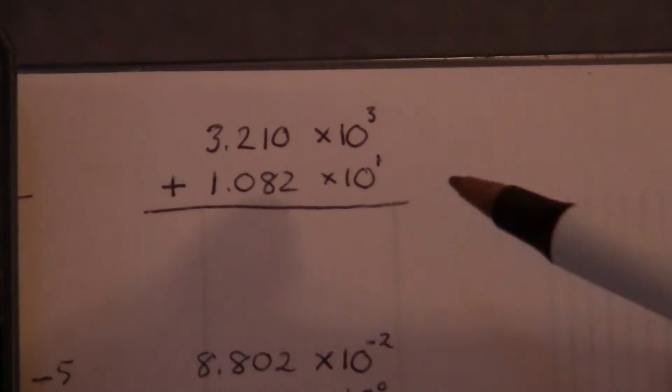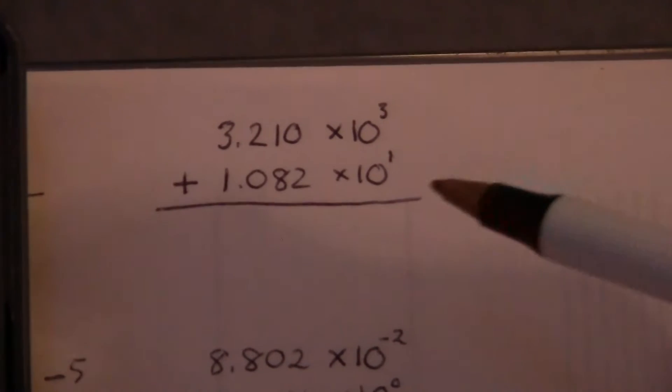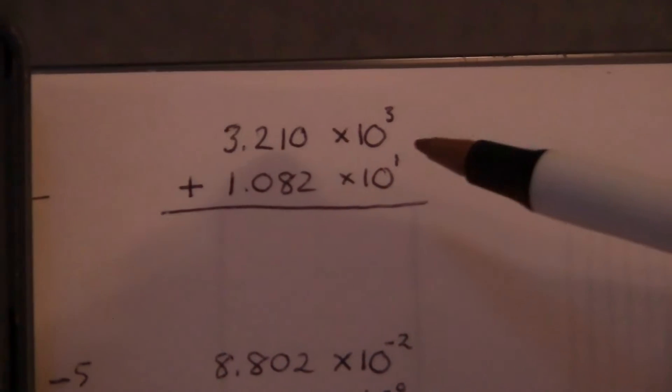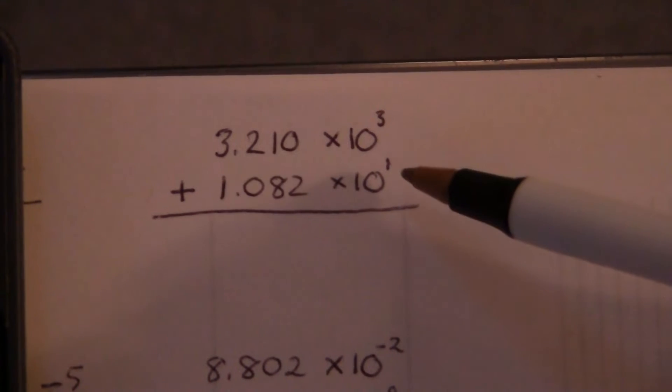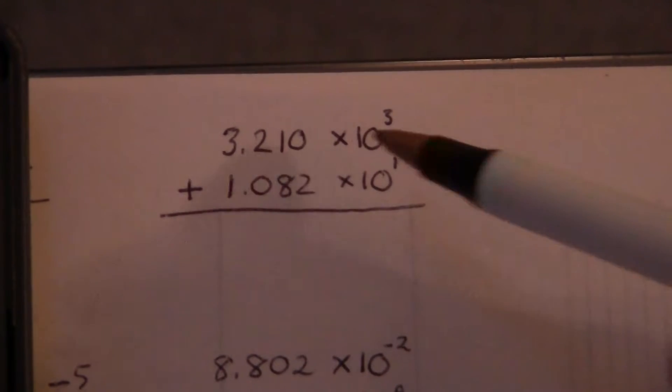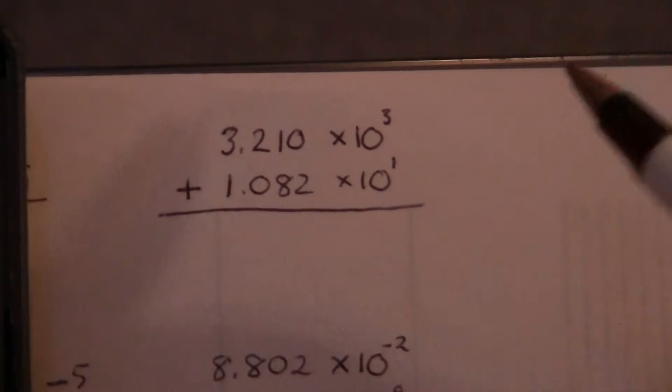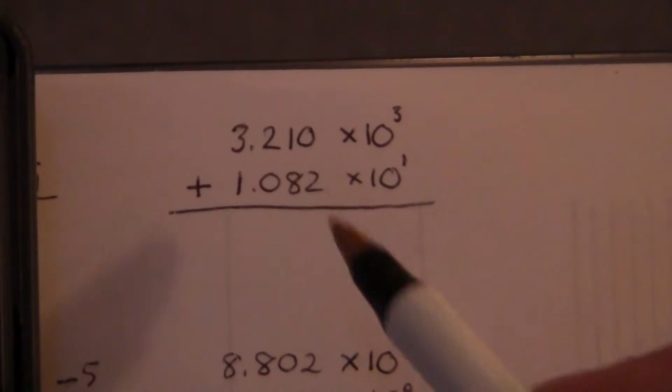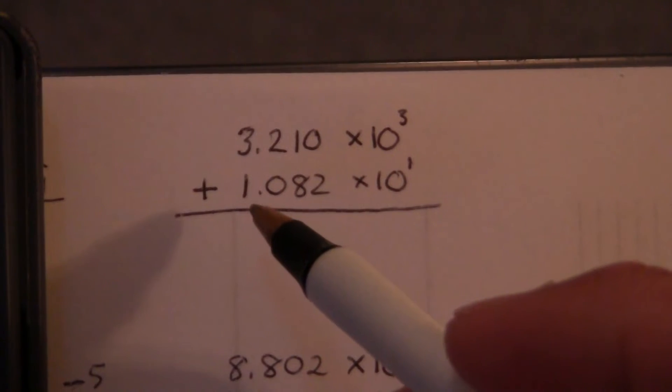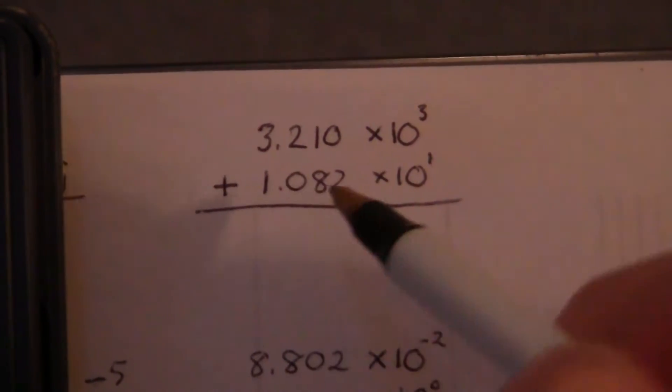Again, with addition and subtraction problems, as we discussed in class, we have to make sure that these powers of 10 are the same, because what are they doing? They're moving the decimal around. And when you add numbers, you always have to make sure the decimal is in the same place. Otherwise, you'll get your digits wrong.